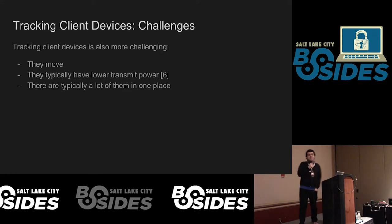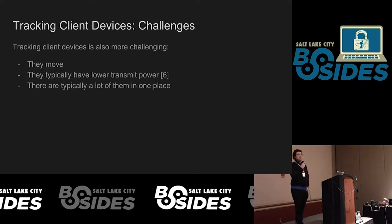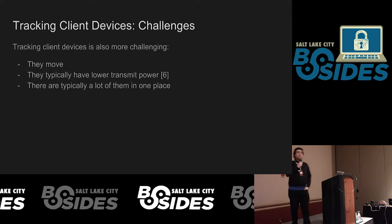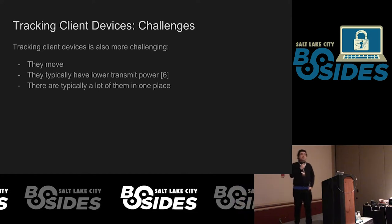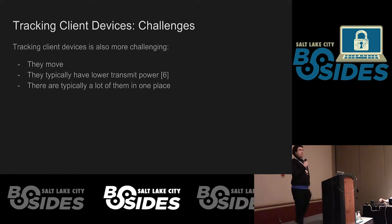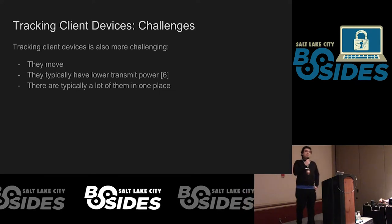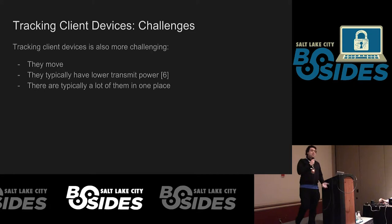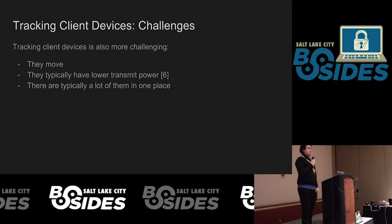The other interesting thing about tracking client devices is that it's more challenging. Unlike access points, which typically don't walk across the room, your typical cell phone moves around a lot because it's carried by a person. Client devices also have much lower transmit power, and there are a lot of them in one place — you can easily have dozens in a single room, so there's a lot more data to sift through.